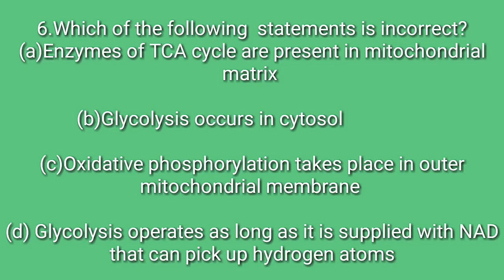Which of the following statement is incorrect? Option A: Enzymes of TCA cycle are present in mitochondrial matrix. Option B: Glycolysis occurs in cytosol. Option C: Oxidative phosphorylation takes place in outer mitochondrial membrane. Answer: Option C is incorrect.